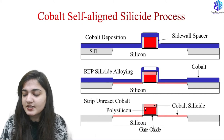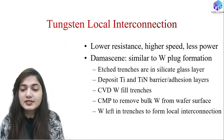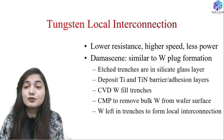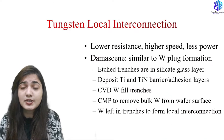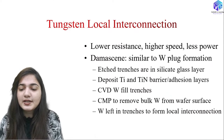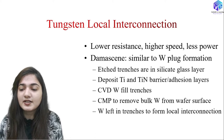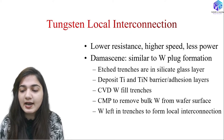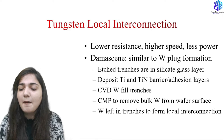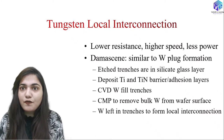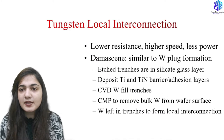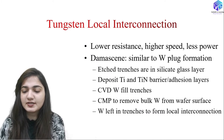Now coming to the tungsten local interconnection, which gives lower resistance, higher speed, and less power consumption. It can be done with the damascene process, similar to tungsten plug formation. First we etch out trenches in the silicate glass layer. After that we deposit titanium and titanium nitride as a barrier or adhesion layer. Then we use chemical vapor deposition of tungsten to fill the trenches. After that we use chemical mechanical polishing to remove the extra tungsten from the wafer surface. The tungsten left in the trenches forms the local interconnection.